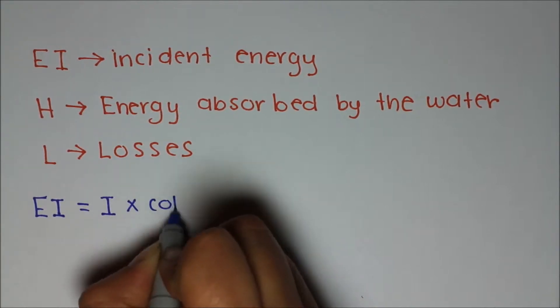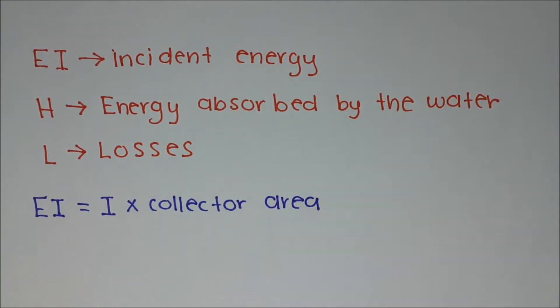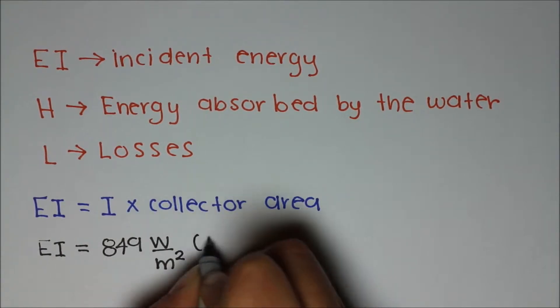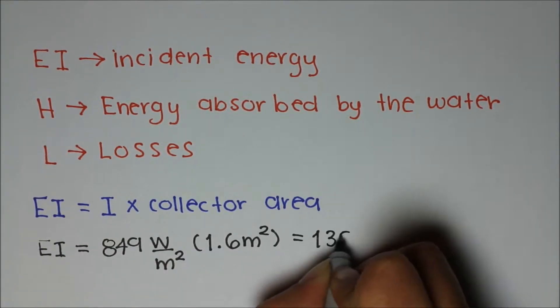EI is given by the radiation intensity times the collector area, which in this case will be equal to 1,358.4 watts.